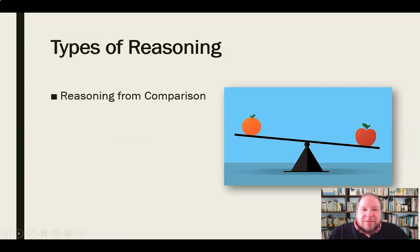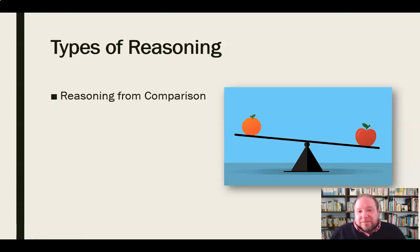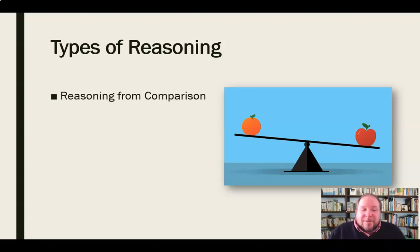Another type of reasoning is reasoning from comparison. We compare things all the time. For example, a politician says, I have a plan to fix social security — here's my plan, here's my opponent's plan, let's compare the two. Or my plan on the budget is this and theirs is that — let's compare those two. So we reason from comparison, comparing two things that are presumably related.